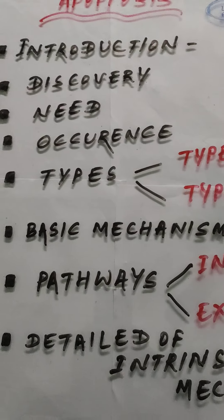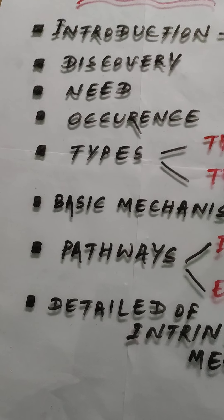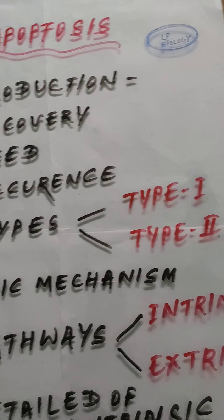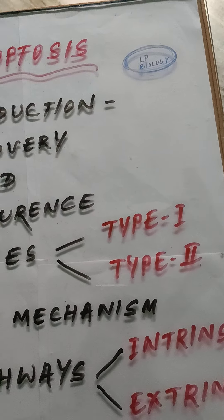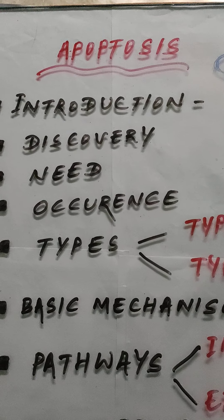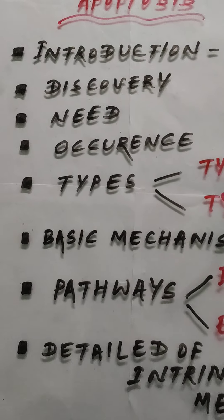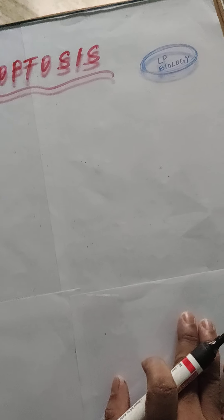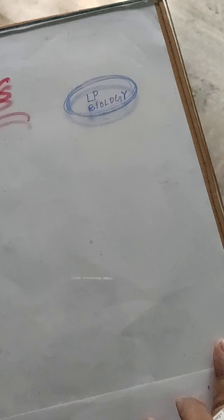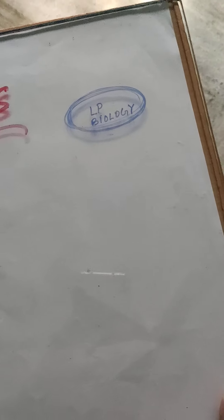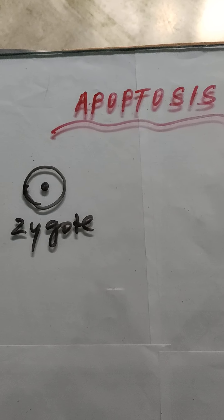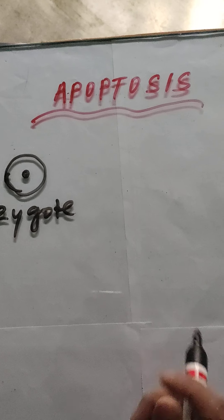As we all know, the process of apoptosis is a common process which occurs in multicellular organisms only. In the case of unicellular organisms, it is not found. The process of apoptosis takes place in multicellular organisms. It takes place both in embryonic condition as well as in adults.